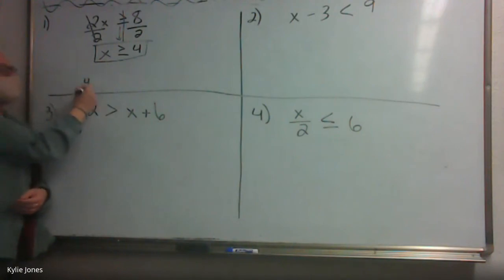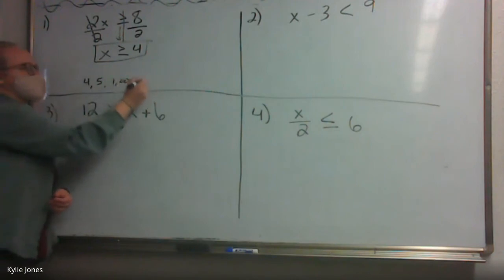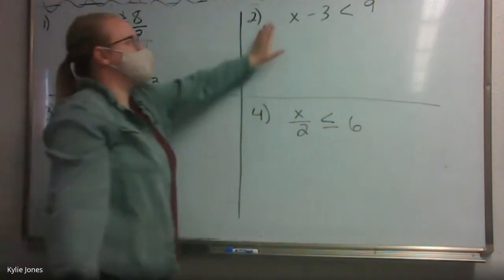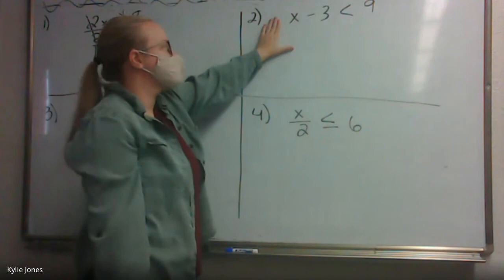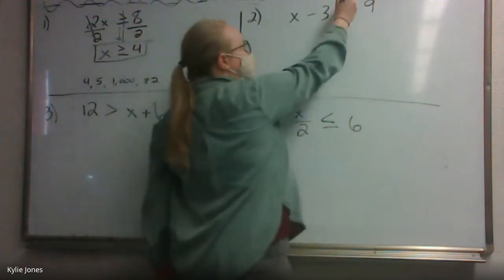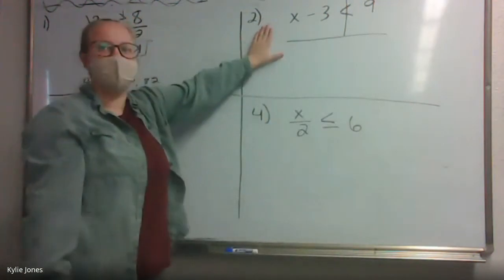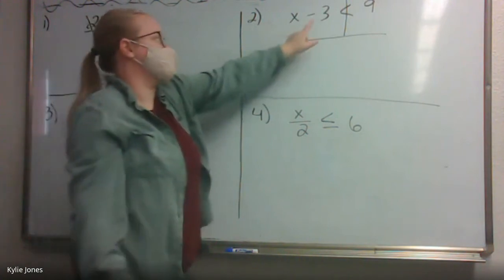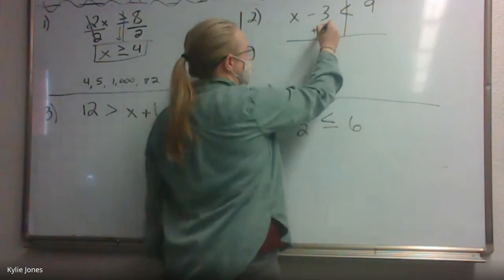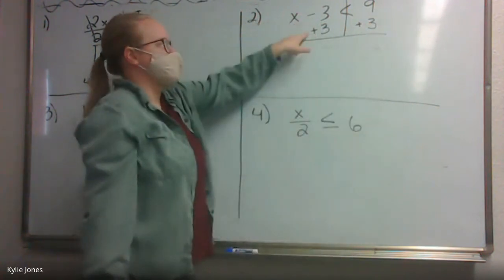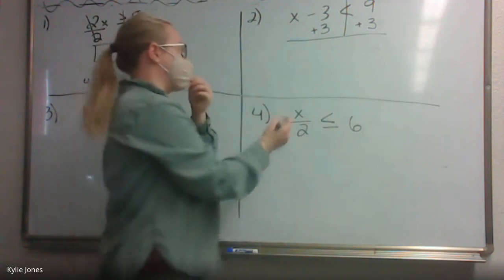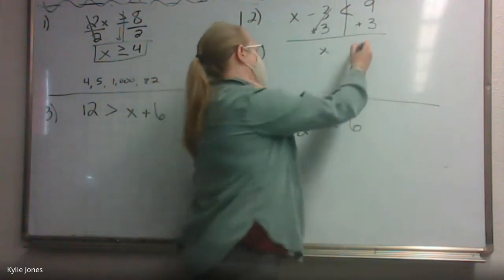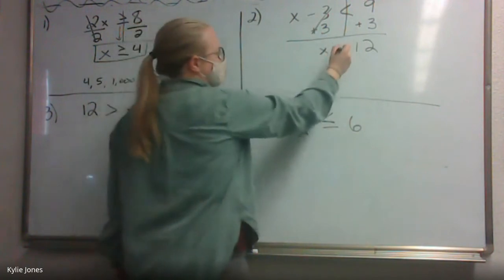You can have solutions like 4, 5, 1000, 82 — anything greater than 4. Number 2: x minus 3 is less than 9. First step — split your inequality. Step two — add 3, the opposite of subtracting 3, on both sides. Negative 3 plus 3 is 0, they cancel. We have x and then 9 plus 3 is 12. The inequality sign stays — x is less than 12. What solutions can we have? 11, negative 3, 7, 9 — anything less than 12. Can I do exactly 12? No — it has to be less than 12.